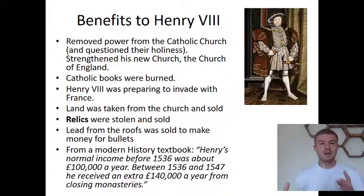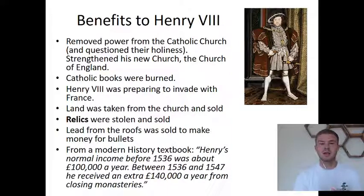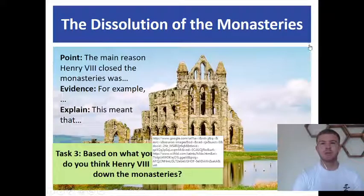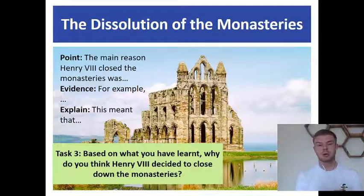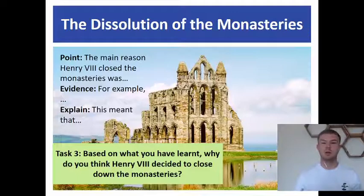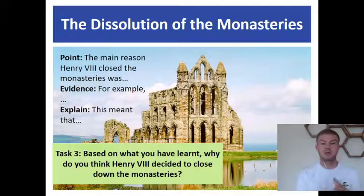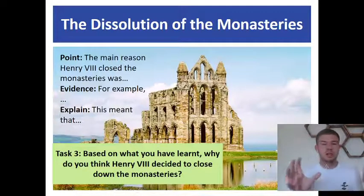So when we say why the monasteries were closed — part of it might be corruption, but we can't ignore the benefits Henry VIII experienced: he became so much wealthier and removed the power of the Catholic Church. Your third task is to write a PEE paragraph. The task is: based on what you have learned, why do you think Henry VIII decided to close down the monasteries? Some sentence starters are provided. For your point, you could say the main reason Henry VIII closed the monasteries was because of their corruption, or because he wanted money, or because he wanted to remove the power of the Catholic Church. Choose one of those points.